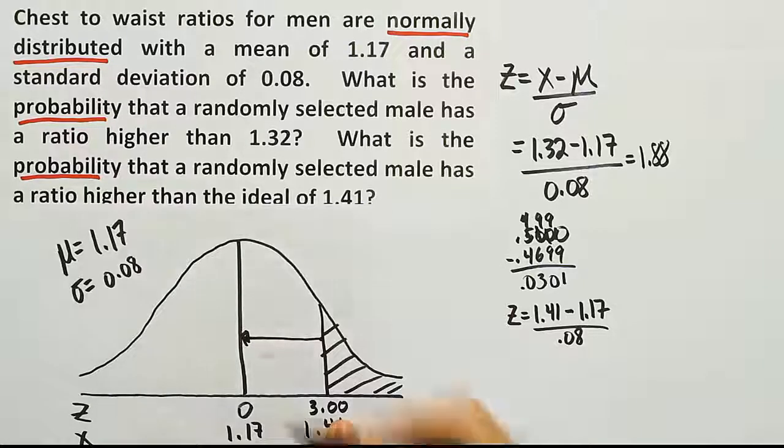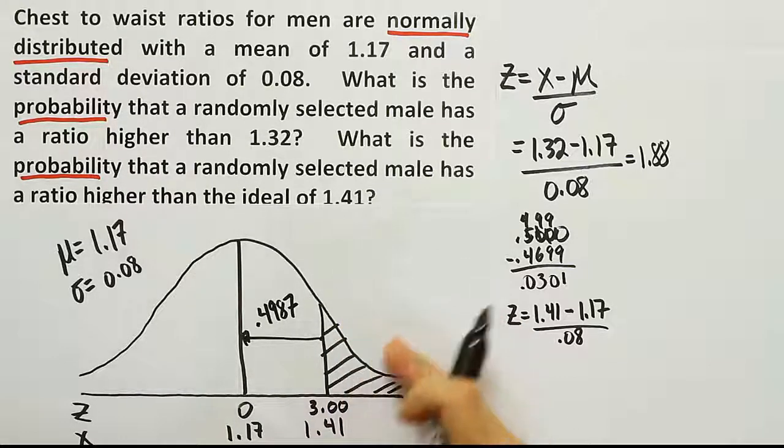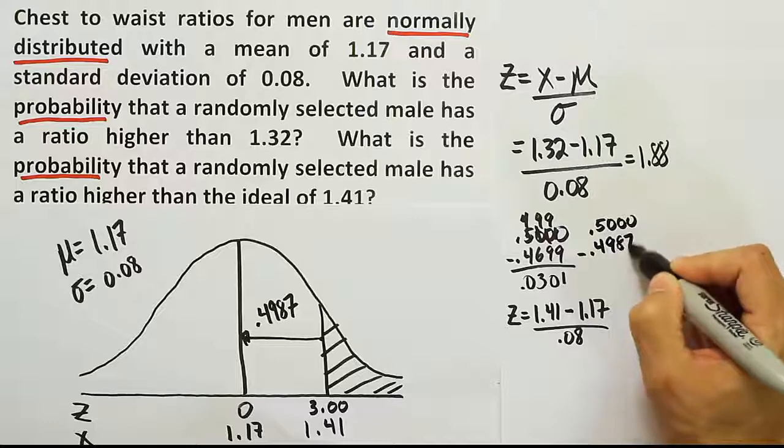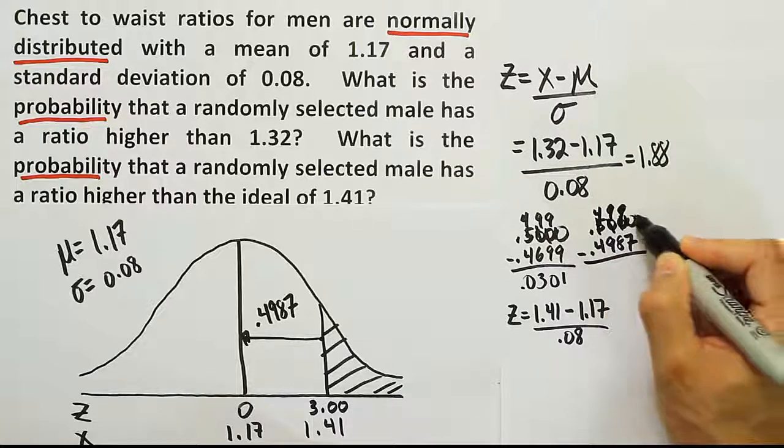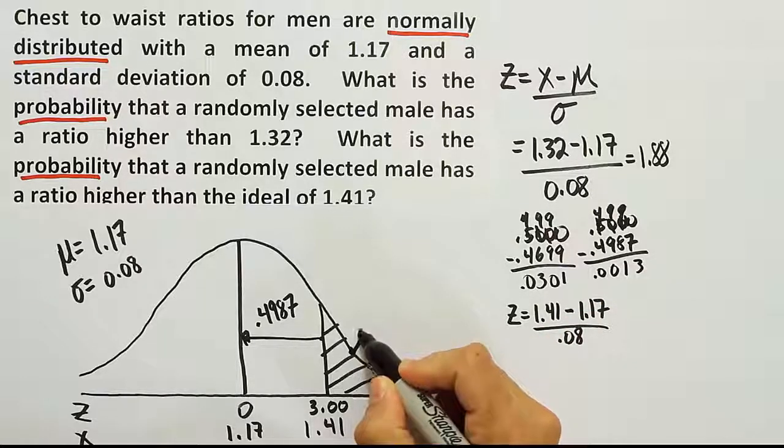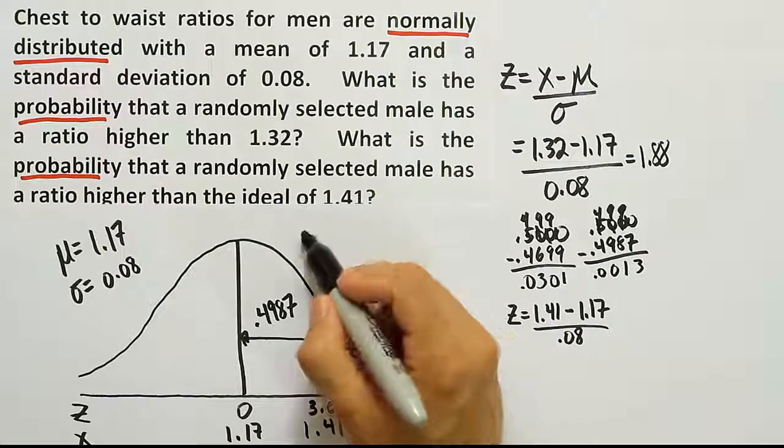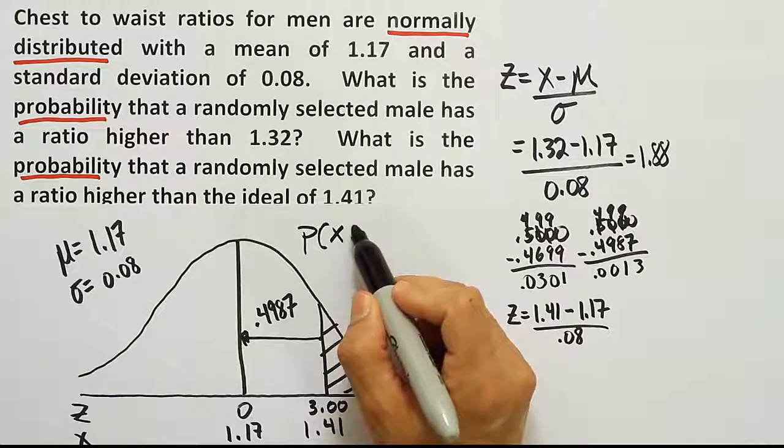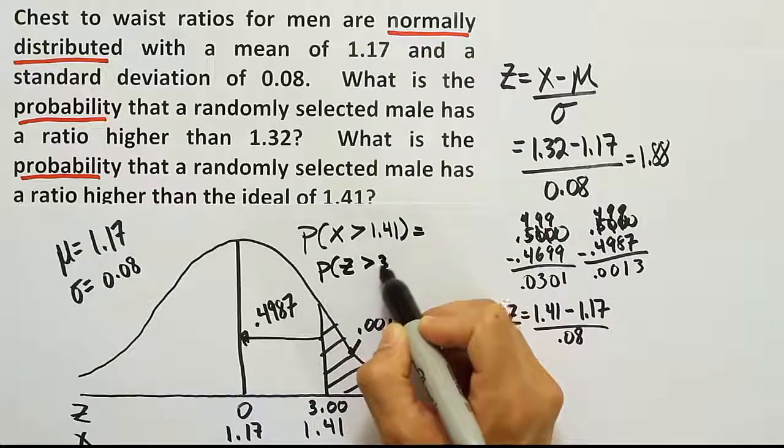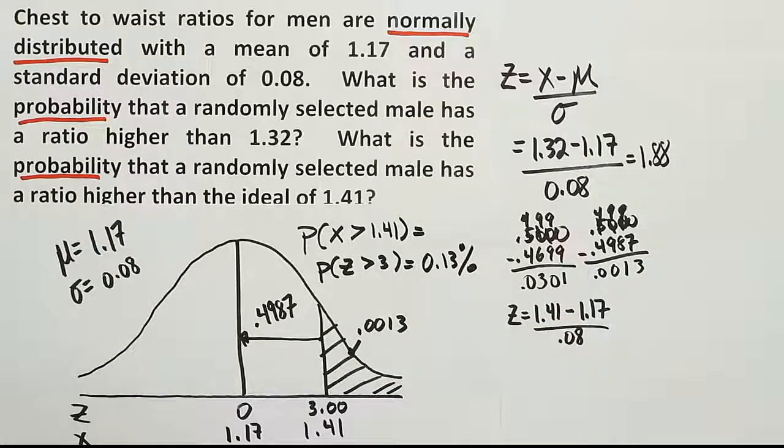Okay, so when I look up 3.00 I get 0.4987. That's the area from here to here. So I have to now calculate the area in this part in the tail by doing again the 0.500 minus the 0.4987. And again doing this subtraction. 10 take away 7 is 3, 9 take away 8 is 1. So we get the answer 0.0013, so 0.13%, which is very small. So the probability that someone's chest to waist ratio is greater than 1.41, which is the ideal, is the same as the probability that a z-score is greater than 3. And that works out to be just 0.13%, so a very small probability of that.